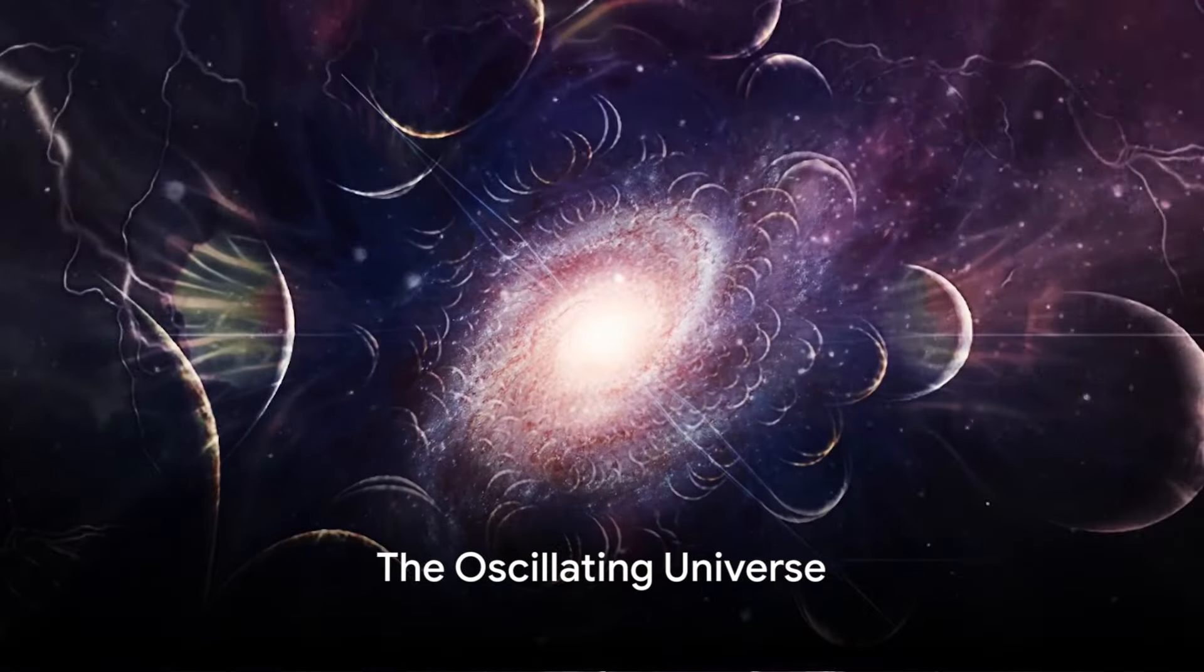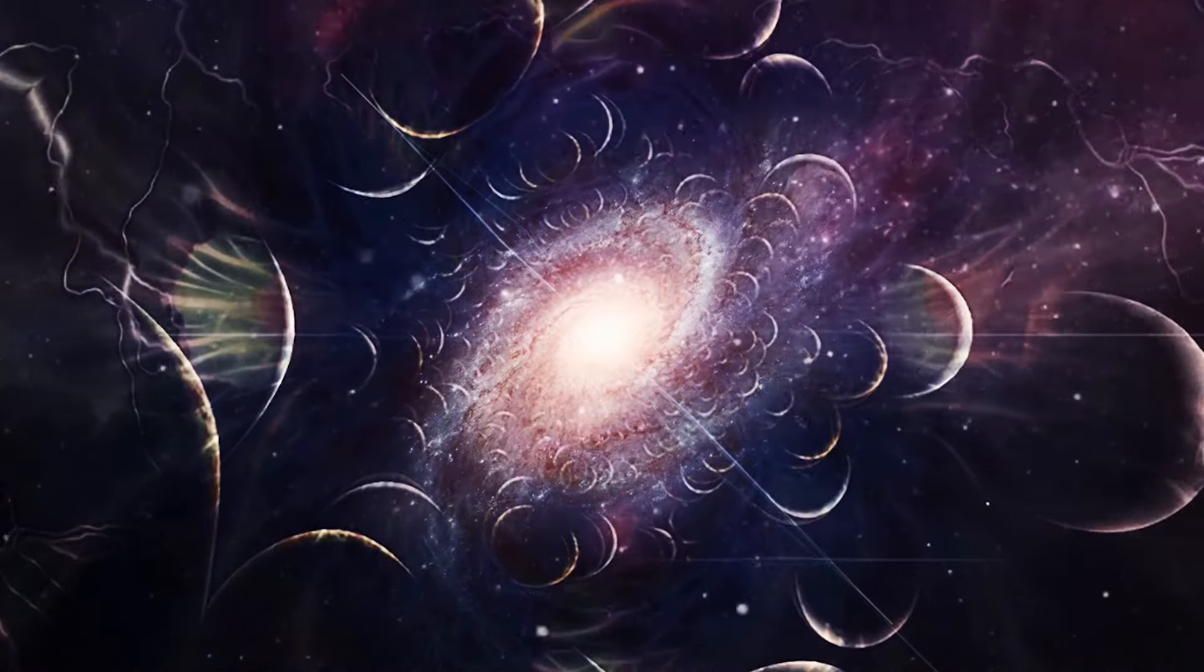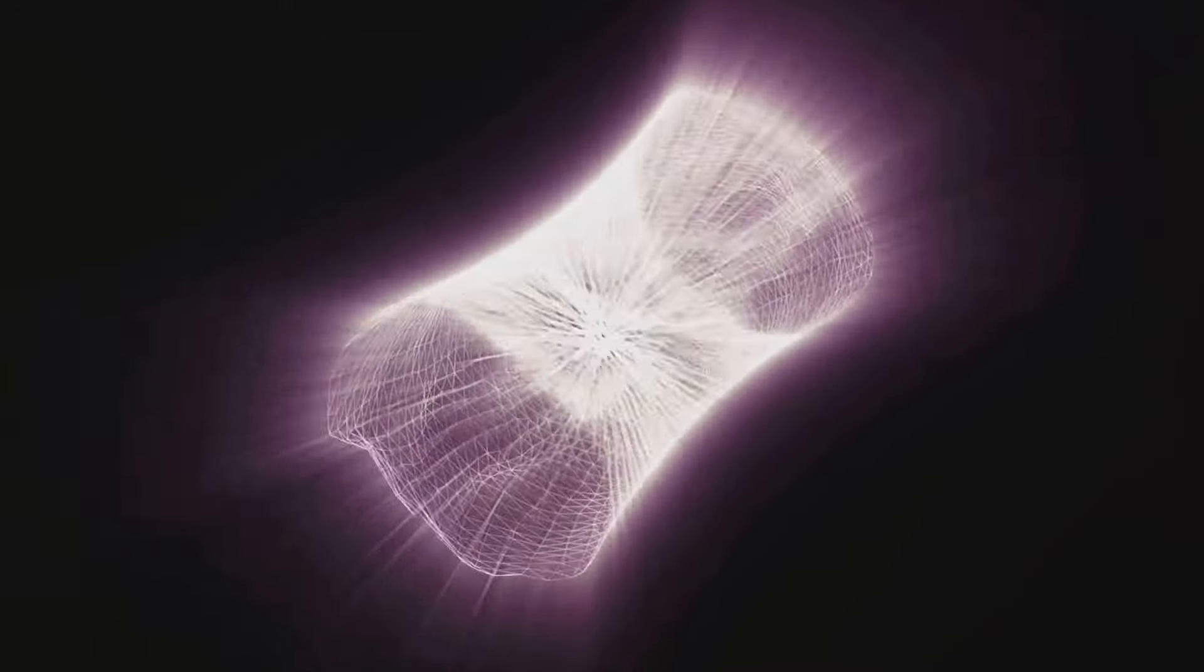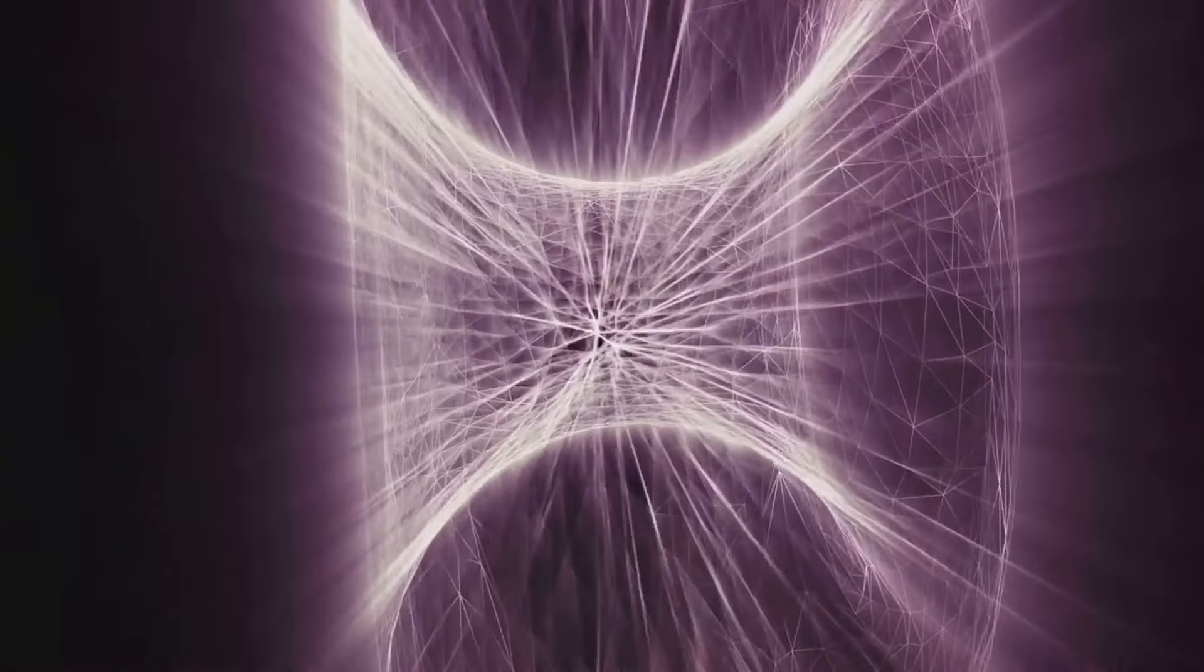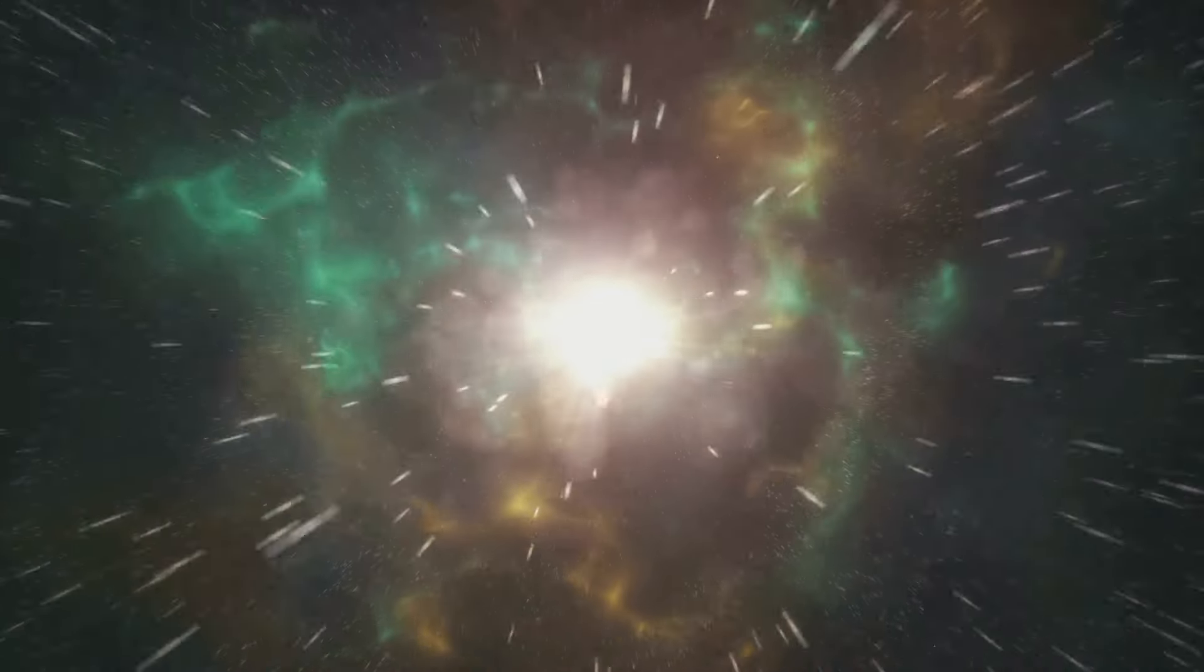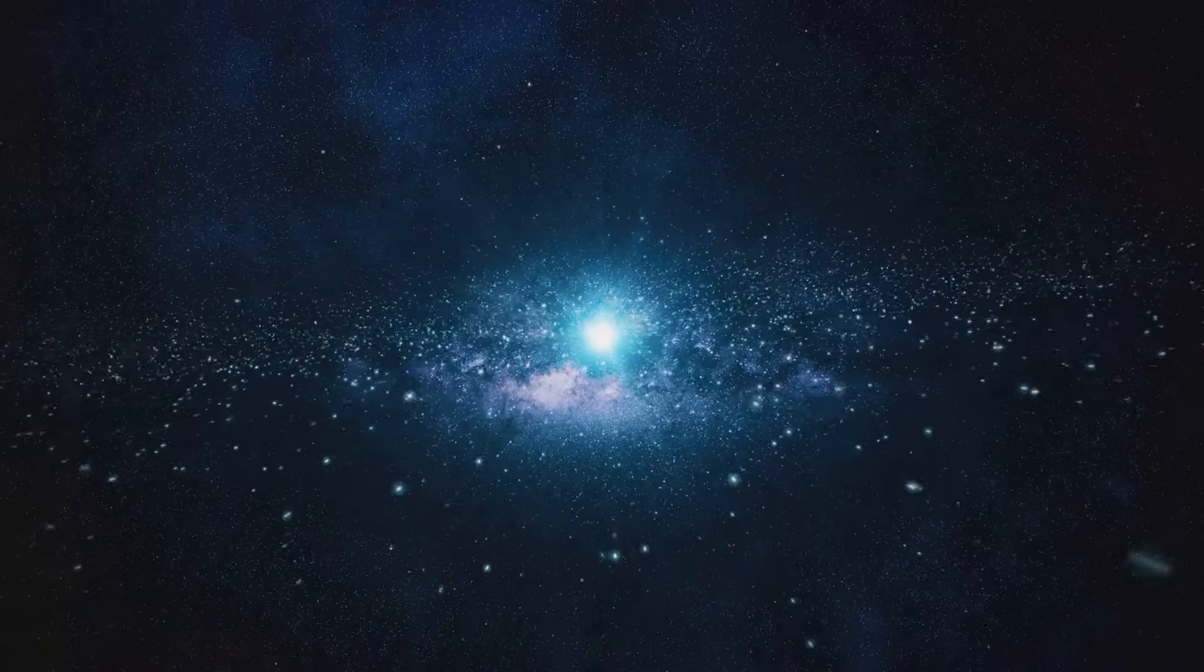Picture the universe as a cosmic pendulum, swinging back and forth in an eternal cycle of creation and destruction. This is the mesmerizing yet perplexing image that the oscillating universe theory paints for us. This theory has its roots in the early 20th century, with the work of Albert Einstein and Alexander Friedman. They proposed a universe that doesn't just sit still, but rather, it breathes, expanding and contracting in a rhythm as steady as a heartbeat.